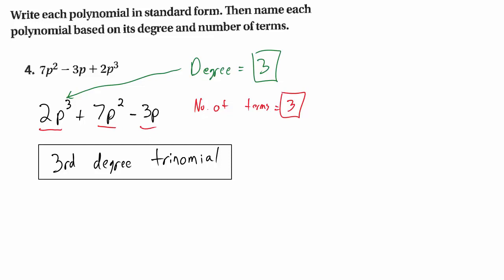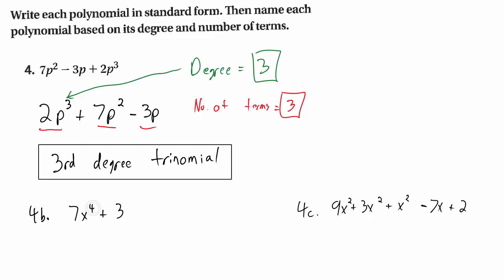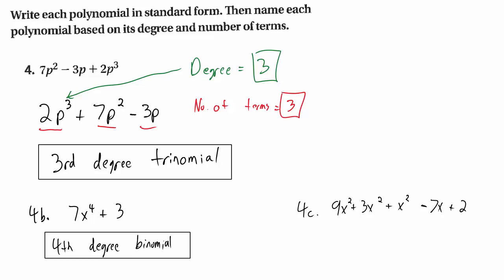Just because those last two examples had matching degree and number of terms, let me add another example so you can see how to differentiate. We only care about the degree and the number of terms. I see a plus sign separating two things, so number of terms is 2. The highest degree is 4. So this would be a 4th degree binomial — 'bi' meaning 2, like bicycle. This next one is intentionally tricky: it seems to have 5 terms.